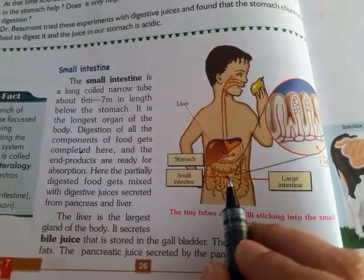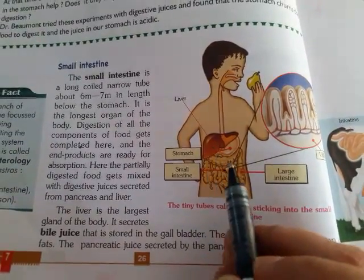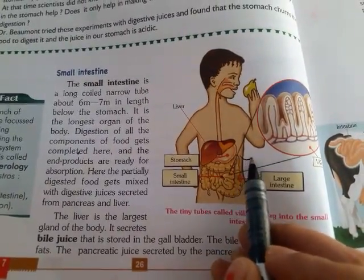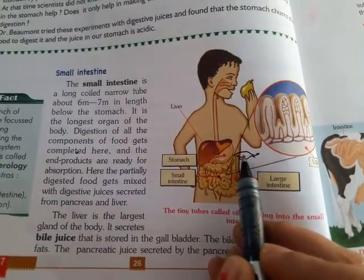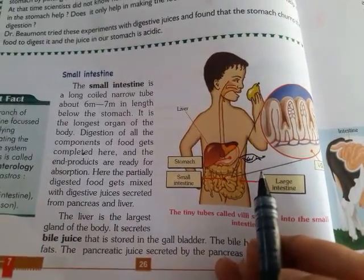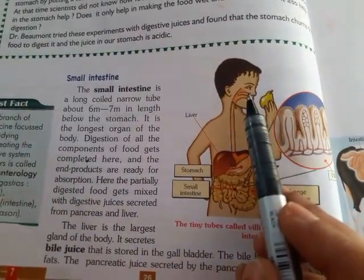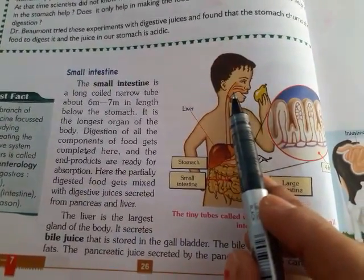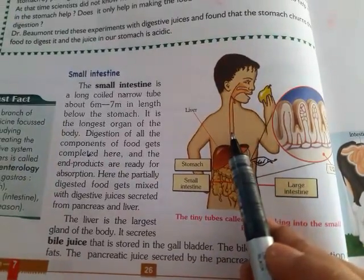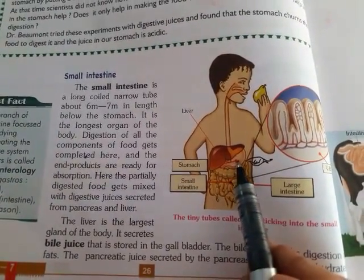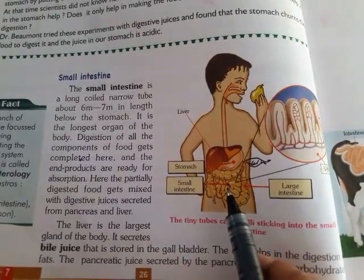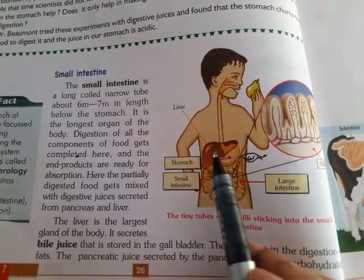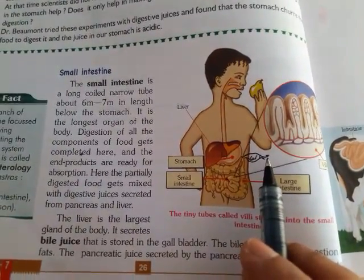This is the liver — here is a leaf-like structure. This is the liver, and here is the pancreas (jise pancreas kehte hai). Your food came from the buccal cavity, then the pharynx, then the esophagus, then into the J-shaped structure called the stomach, and now into the small intestine. The small intestine receives secretions from the liver as well as from the pancreas.